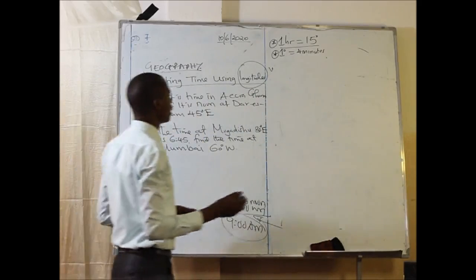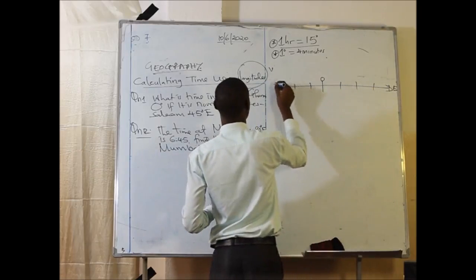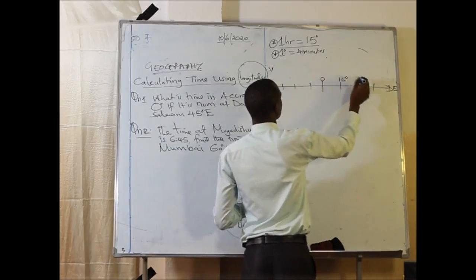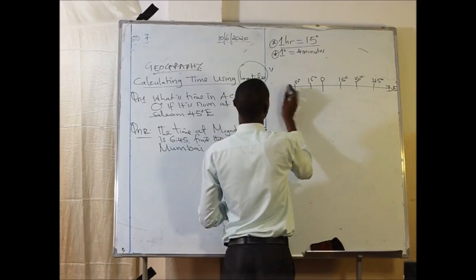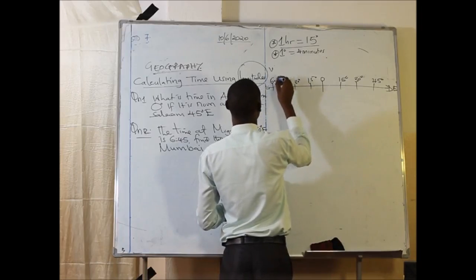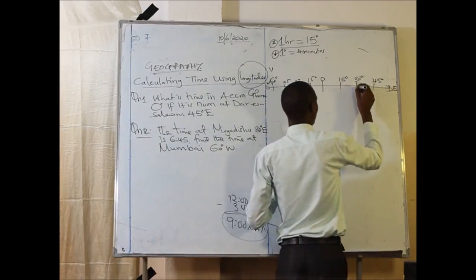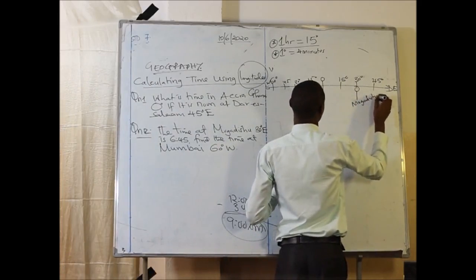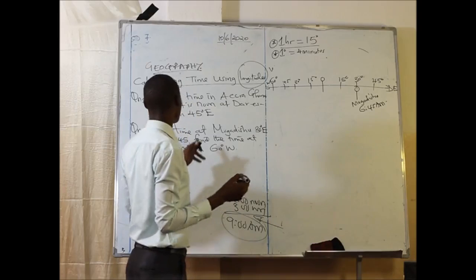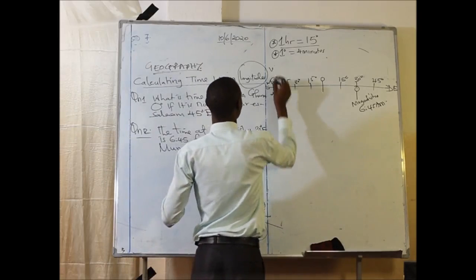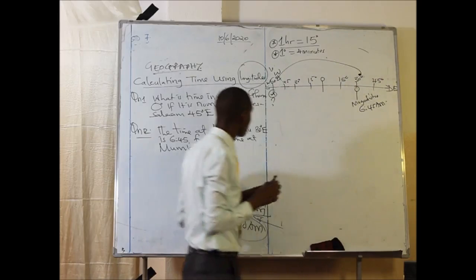Let us group the data. The time at Mogadishu is 30 degrees east. Let us draw a timeline with zero degrees in the centre, 15, 30, 45 degrees to the east, and 15, 30, 45, 60 degrees to the west. Mogadishu is here at 30 degrees east and the time given is 6:45 AM. We need to find the time at Mumbai, 60 degrees west. This person will move all the way from 30 degrees east to 60 degrees west.